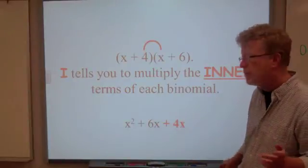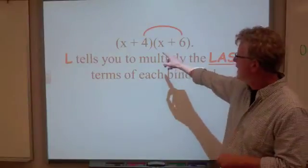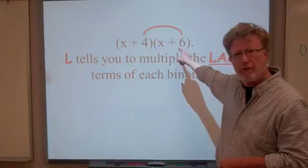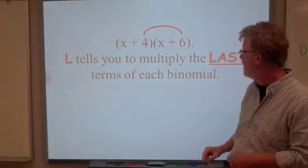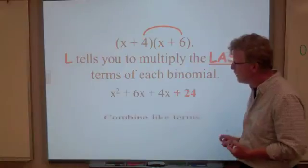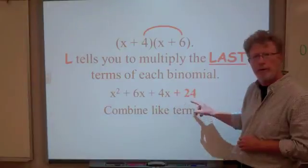And that would be the last terms. So the last term in the first polynomial is 4. The last term in the second polynomial is 6. And what we end up with when we multiply those is 24. And so our answer is x squared plus 6x plus 4x plus 24.